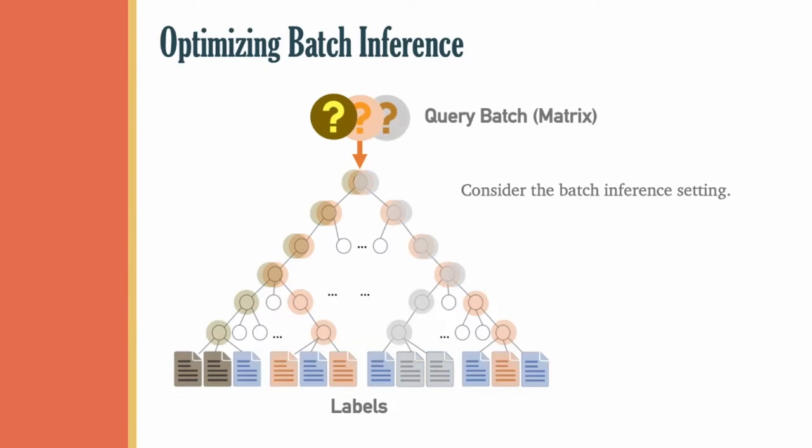In this setting, we will essentially have a sparse query matrix rather than just a single sparse query vector. And of course, each query is likely to be relevant to different labels in the tree. And hence, we will also have a distinct beam search profile. In this simplified figure, for example, we have three different queries at the top of the tree. And the beam search for each one isolates different parts of the tree with the relevant labels.